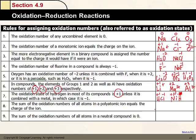For polyatomic ions, such as carbonate (CO₃²⁻) or ammonium (NH₄⁺), when you sum up the oxidation numbers of all elements in the ion, the total must equal the charge of the ion. The last rule is that the sum of all oxidation numbers in a neutral compound equals zero.